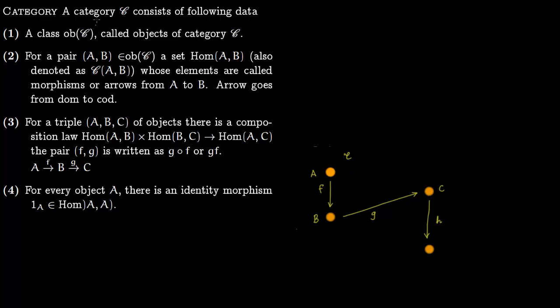Let us define a category via directed graphs. Consider these vertices — these rust-colored blobs — which we will call objects of the category C. Let us name them: object A, object B, object C. Between these objects there are some morphisms — arrows — say F, G, and H. That is all that is needed to start defining a category.